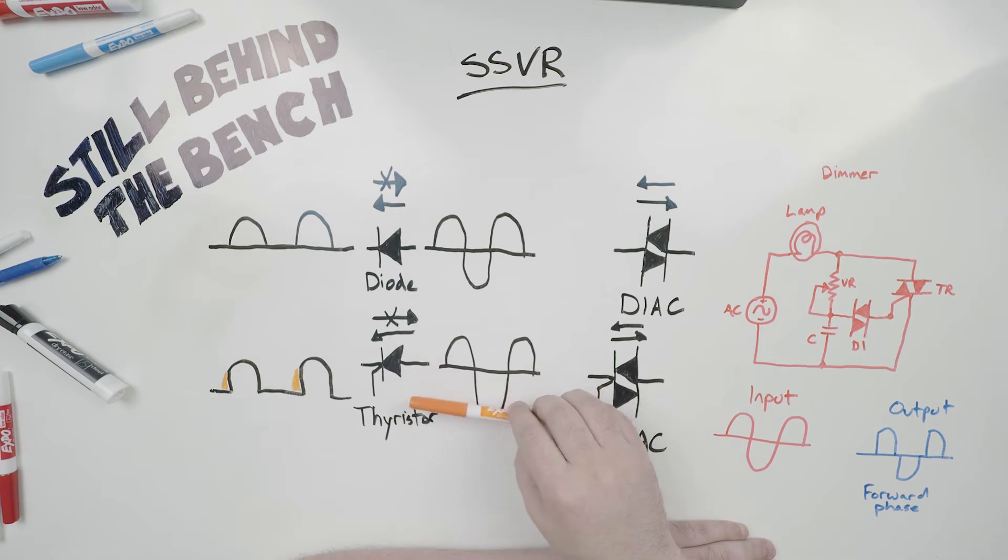Then we move up to the thyristor or the SCR. Again you have your input signal. However this one seems to be cutting off the front edge.